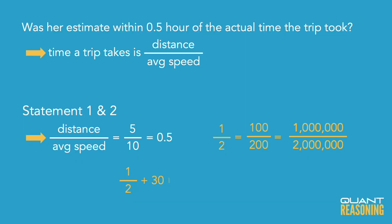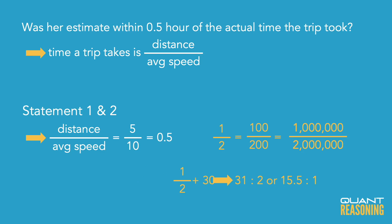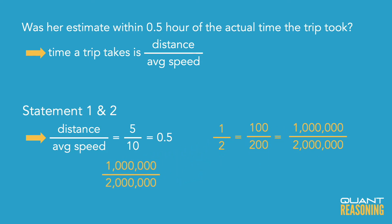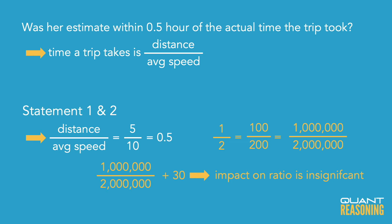If the true numbers were 1 and 2, adding 30 means the ratio is now 31 to 2, or 15.5 to 1. But if the true numbers were actually a million and 2 million, what impact would adding 30 have on this ratio? Practically no impact at all, because 30 is just such a small fraction of the original starting point.